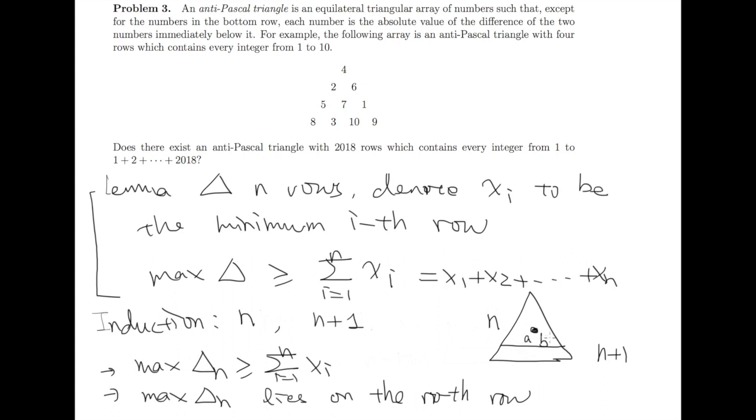Let's say a and b, where a is larger than b. Then necessarily a minus b equals the max of delta_n. Since b is a positive integer, we have a is larger than max of delta_n. This means we can find a number larger than the max, which is a contradiction. So necessarily this number lies on the nth row.